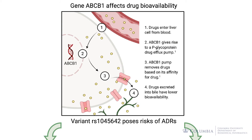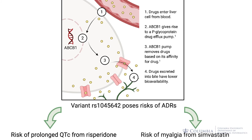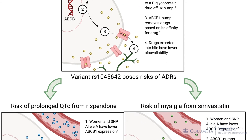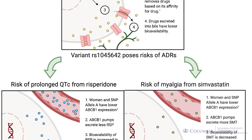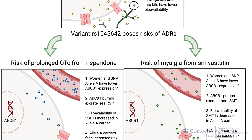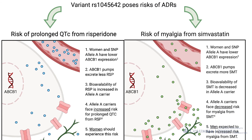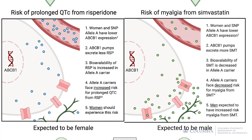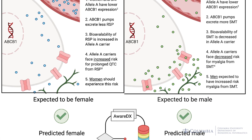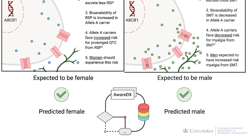One of the important discoveries of our study is that sex differences are more nuanced than simply reducing the dosage of a drug for either sex. A single gene's differential expression can actually have very diverse effects in both men and women for different drugs. For example, the gene ABCB1 — pharmacogenetically — causes a prolonged QTc from Risperidone in women, whereas it puts men at risk of myalgia from Simvastatin. These are completely unrelated side effects and unrelated drugs tied to a single pharmacogene. The key point is that a comprehensive, nuanced understanding is needed beyond just reducing dosage.